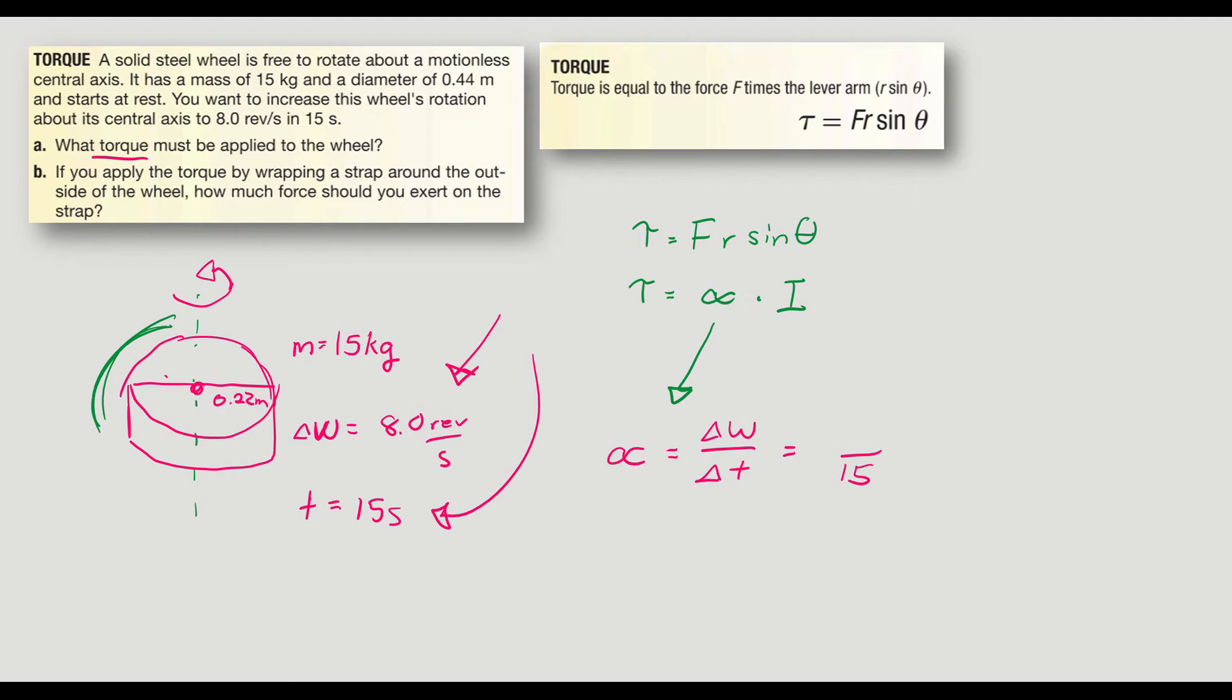What about the change in velocity? You might be tempted to say, well, I'm going from 0 to 8. So 8 minus 0, the change is 8. But remember, when we do this angular velocity, we have to have it in radians per second, not just revolutions. So if I do one revolution per second, how many radians per second is that?